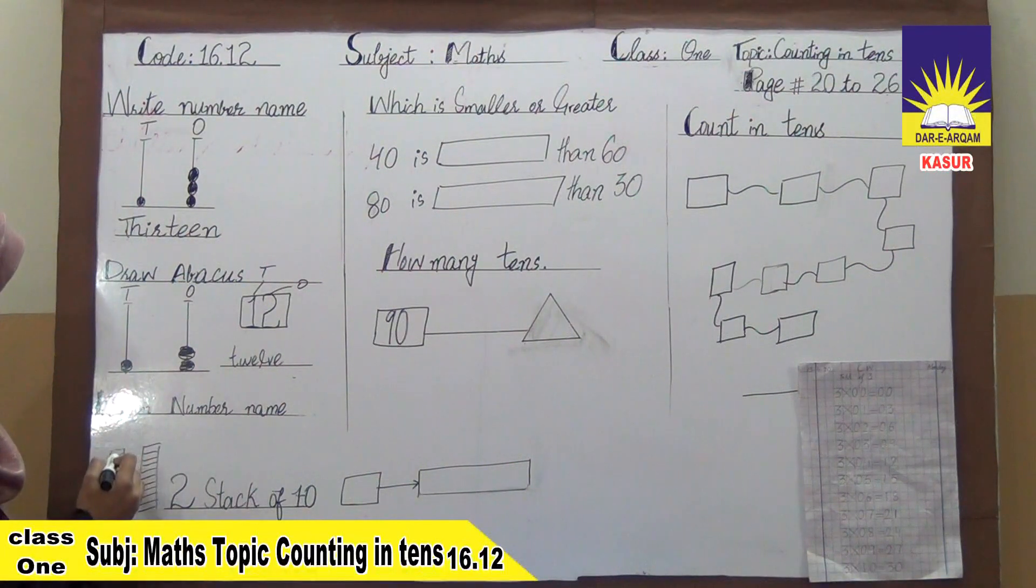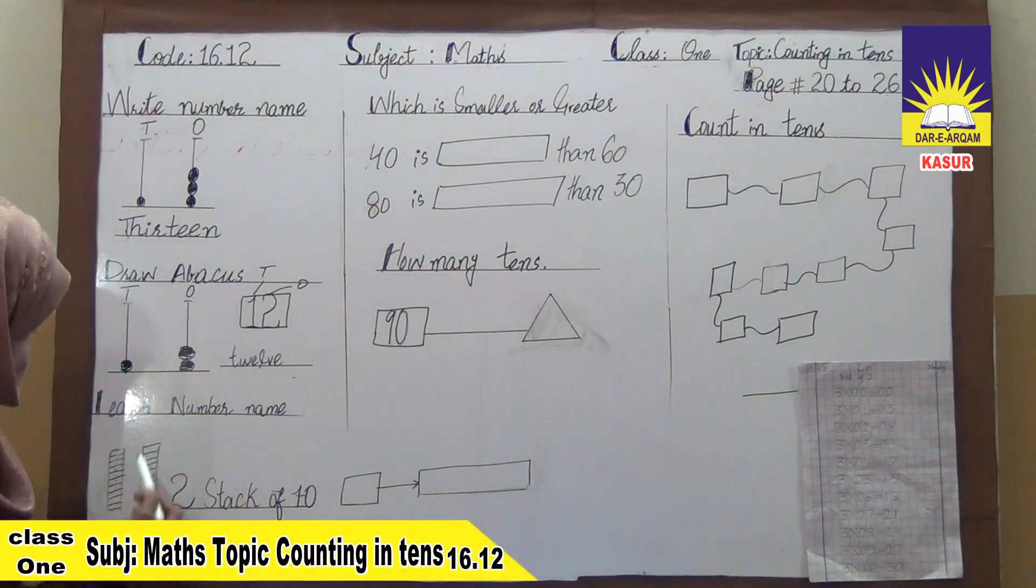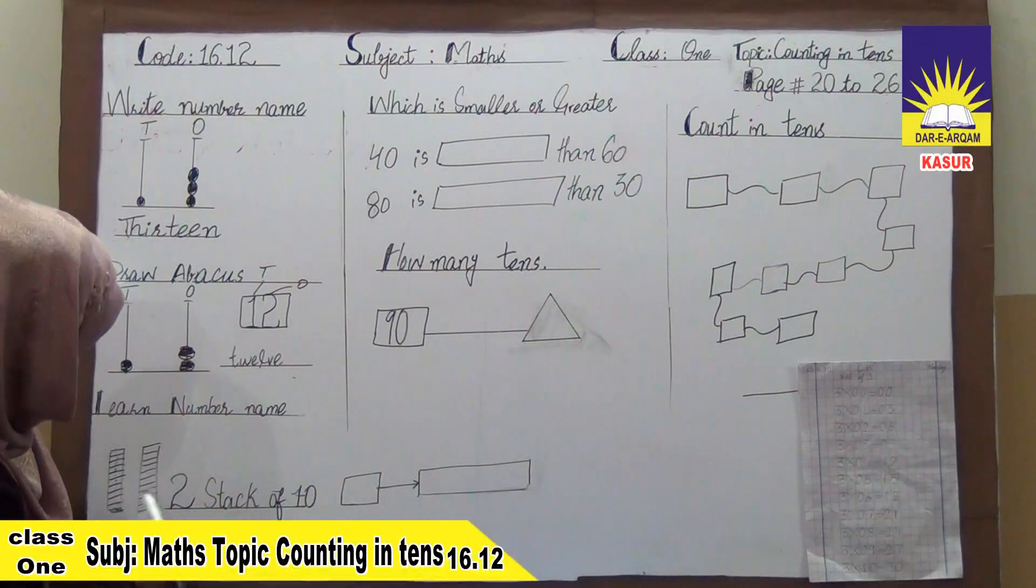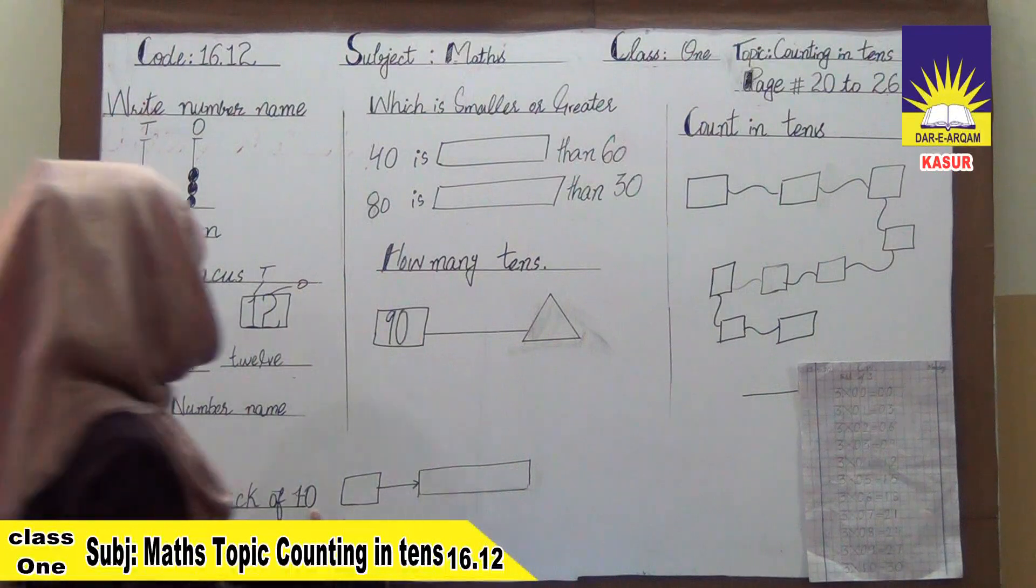1, 2, 3, 4, 5, 6, 7, 8, 9, 10. Here we have ten boxes. Here we have two shapes. Here we have two. Stack of ten. Ten means this box is ten. That is why there is ten. So we have two stacks of ten.